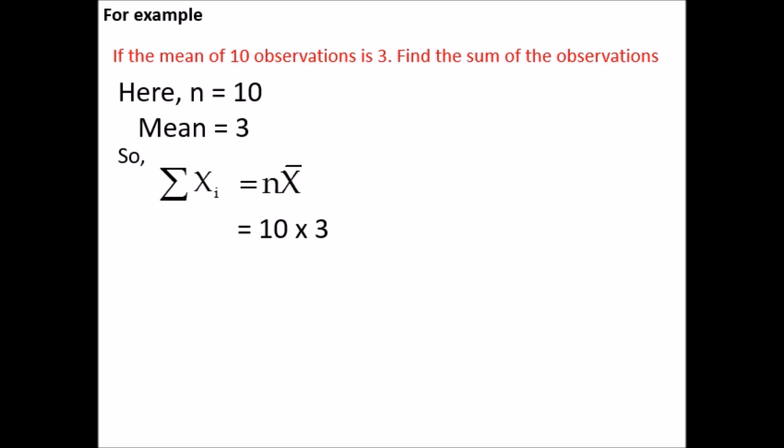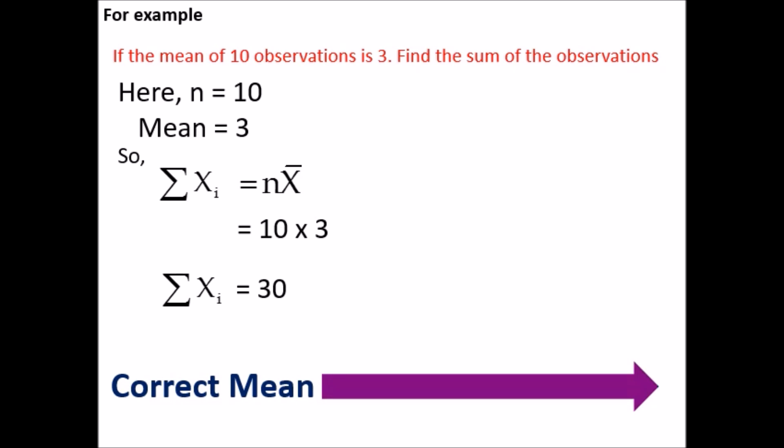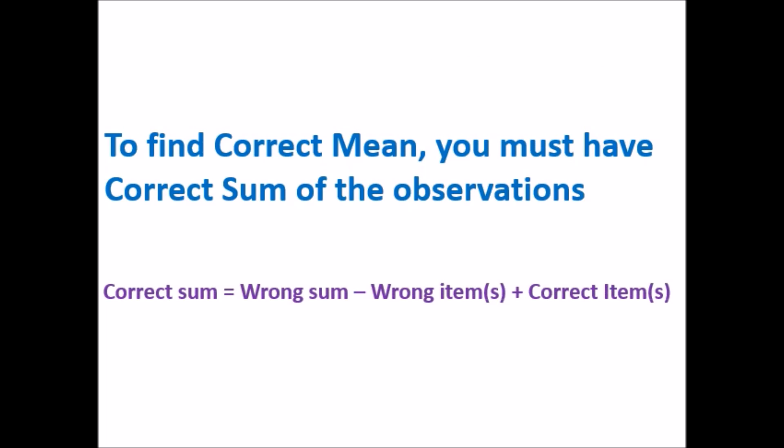Now let's go to correct mean. To find the correct mean, you must have correct sum of observations. Remember this formula: Correct sum = Wrong sum - Wrong item(s) + Correct item(s). Here, item means observation.